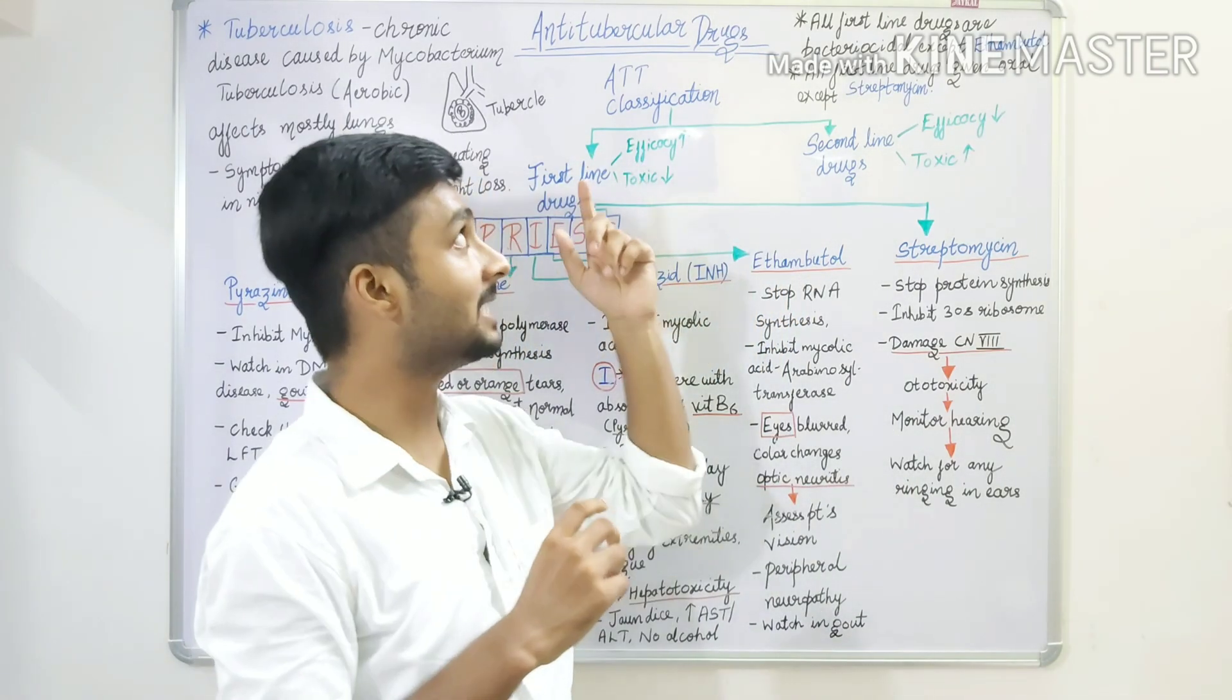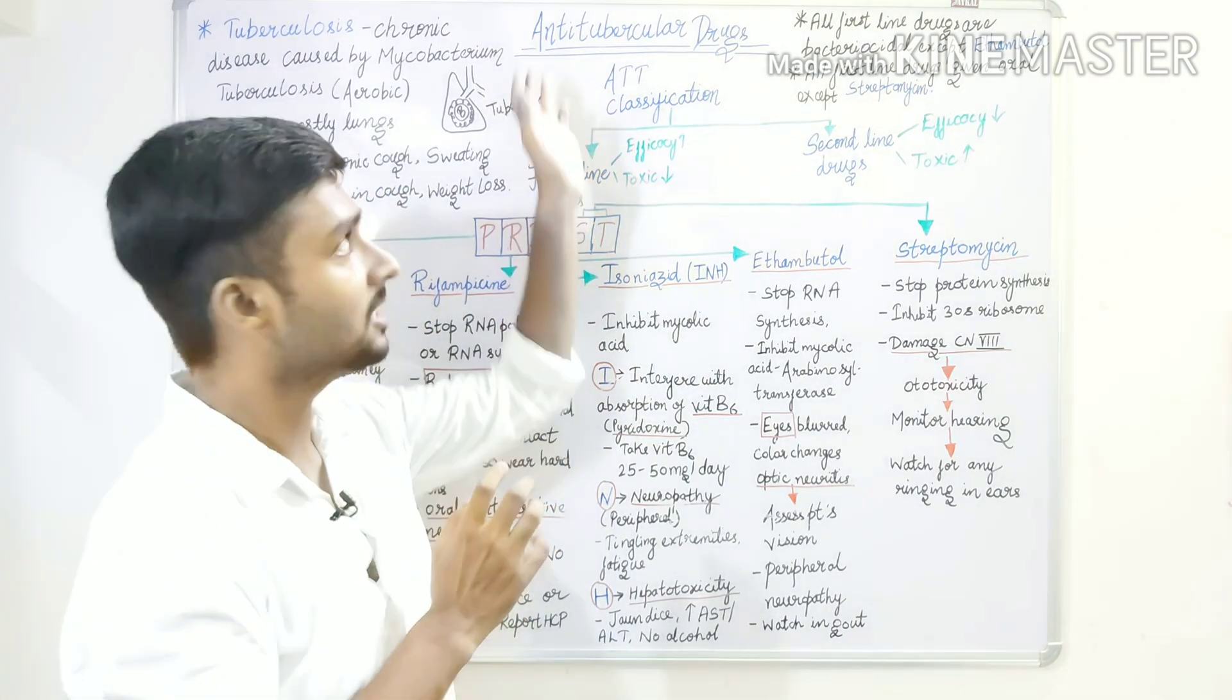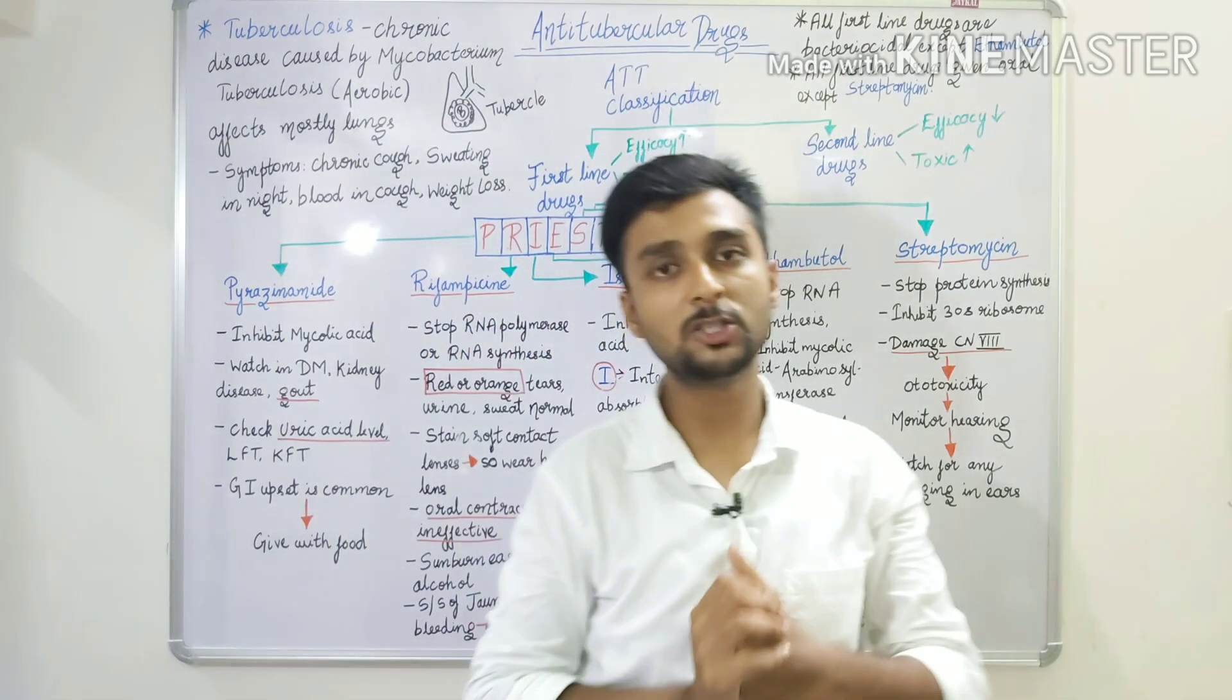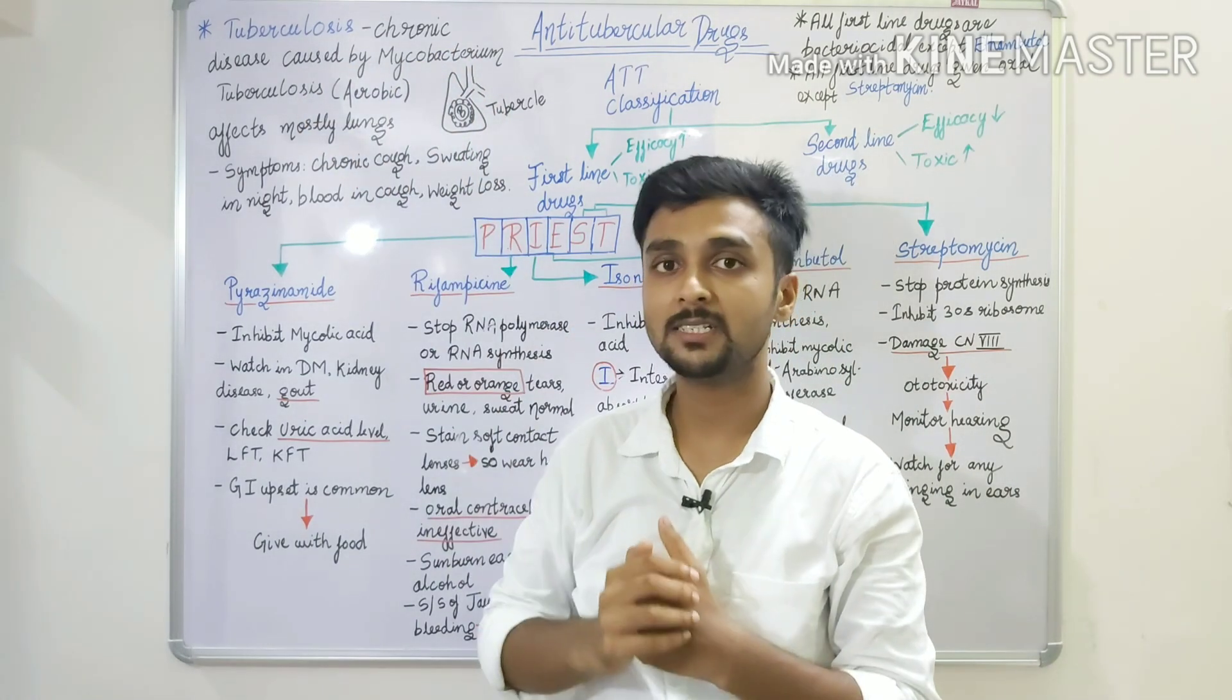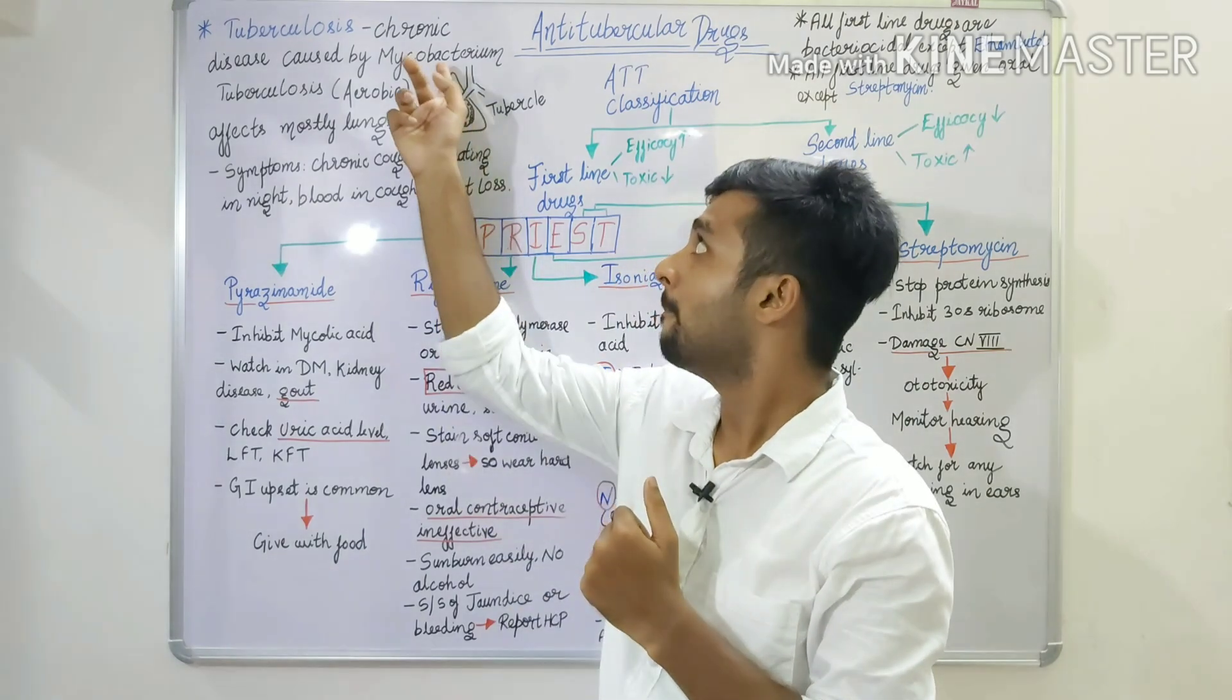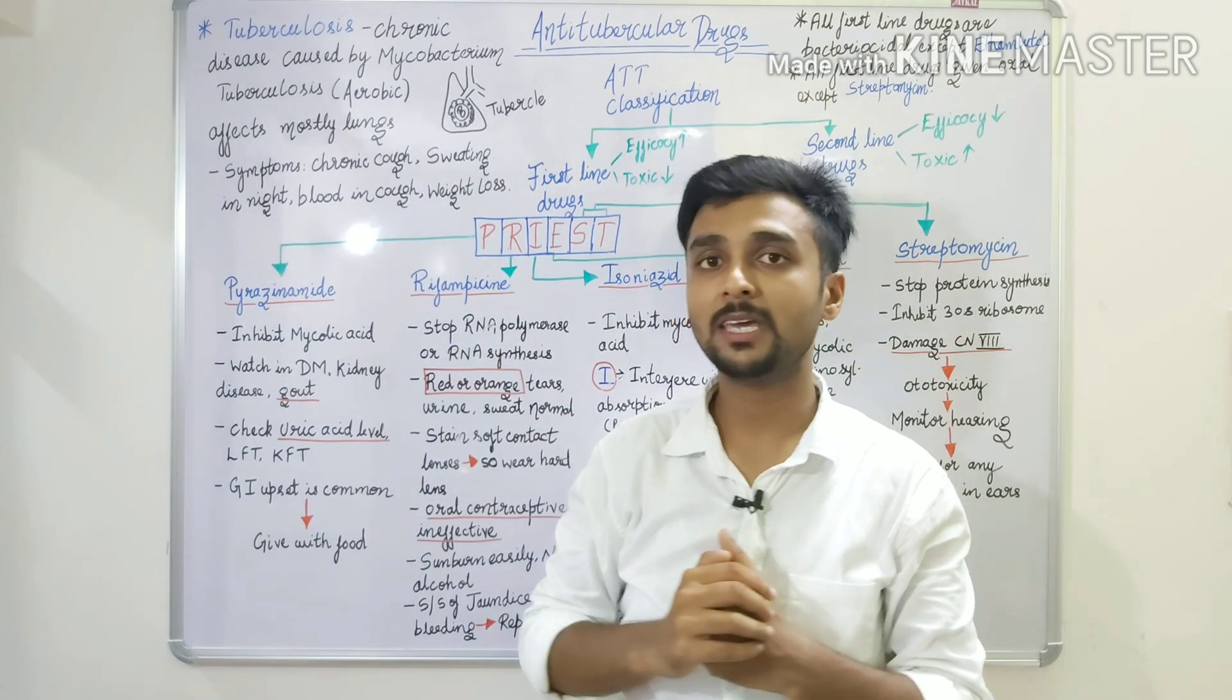The topic anti-tubercular drugs is made up of two words. If we break it, anti means against, tubercular means tuberculosis. So, these are drugs we are giving against tuberculosis. What is tuberculosis? It is a chronic disease, means it takes very long time to occur, caused by mycobacterium tuberculosis, which is aerobic in nature, means it grows in presence of oxygen and mostly affects our lungs.